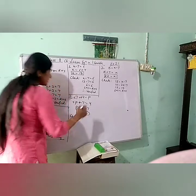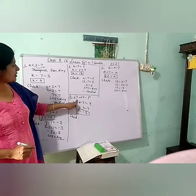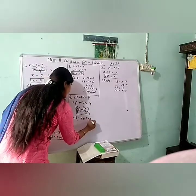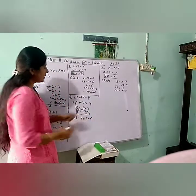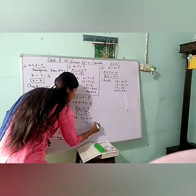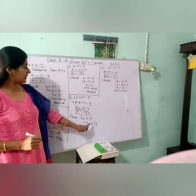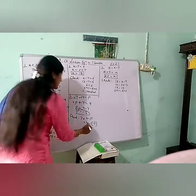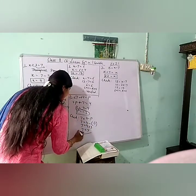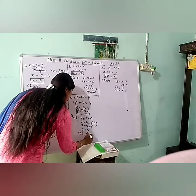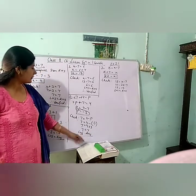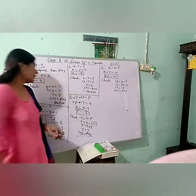Now we will check the solution. The equation is 7 equals 4 minus P. Putting P equals minus 3: 4 minus (minus 3). Minus minus becomes plus, so it becomes 4 plus 3, that is 7. LHS also has 7, so LHS equals RHS — therefore hence verified.